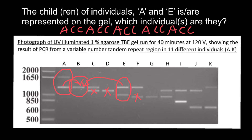The remaining genotypes are also not possible. For each of them, either parent A does not have the required allele size, or neither parent has a particular allele size needed. Both parents may share one allele size, but none of them can contribute the other required allele, so none of these additional genotypes are possible children of individuals A and E.